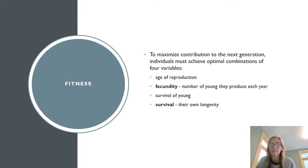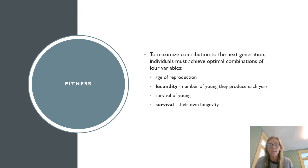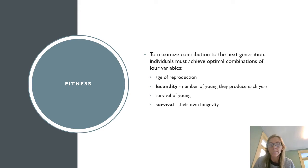In a healthy population, the birth rate will equal if not exceed the death rate. Most populations will level off after reaching a certain size, and that's when we might see an increase in immigration out to other patches in the landscape.